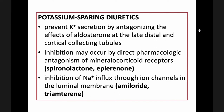Potassium-sparing diuretics prevent potassium secretion by antagonizing the effects of aldosterone at the late distal and cortical collecting tubules. Inhibition may occur by direct pharmacologic antagonism of mineralocorticoid receptors, such as with spironolactone and eplerenone. Inhibition of sodium influx through ion channels in the luminal membrane can also spare potassium, as seen with amiloride and triamterene.